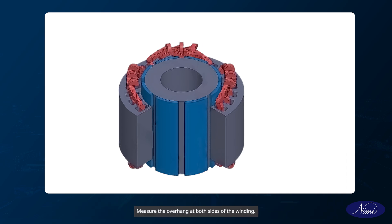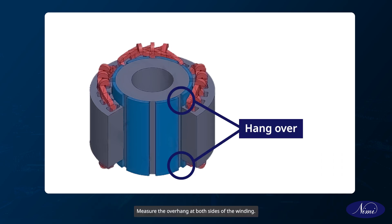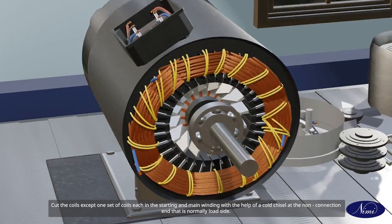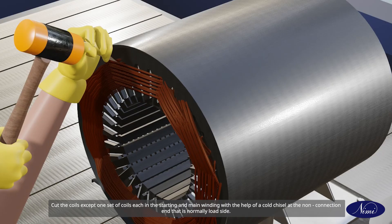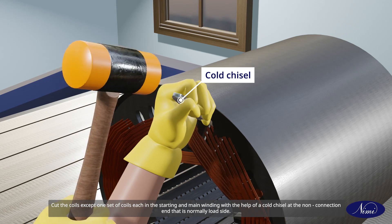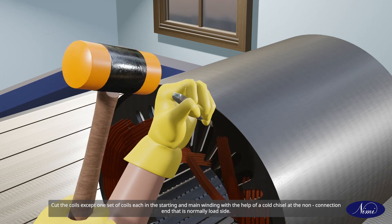Measure the overhang at both sides of the winding. Collect possible data like number of slots, coil pitch, etc. Cut the coils except one set of coils each in the starting and main winding with the help of a cold chisel at the non-connection end, that is normally load side.